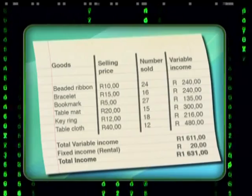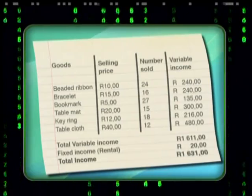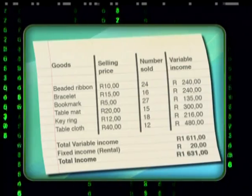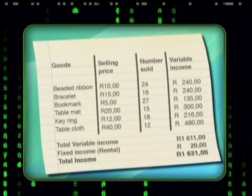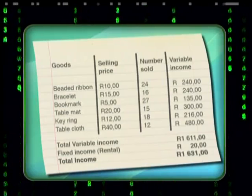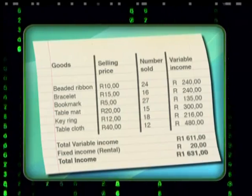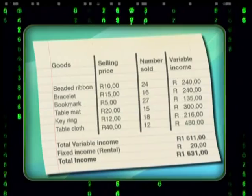In my next table, I recorded the income Ma Di collects every week. The first column shows her selling price and the second column the number of things sold. I calculated the total income for each item and added them together to get the total amount of variable income. I then added in the 20 rand that Mr. Banga pays Ma Di for his share of the storeroom rent. The total income Ma Di brought in last week came up to 1,631 rand.